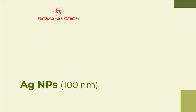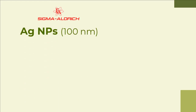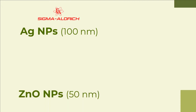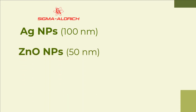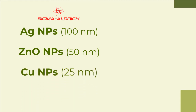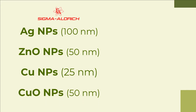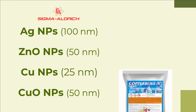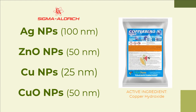These include silver nanoparticles with an average size of 100 nanometers, zinc oxide nanoparticles with a particle size of 50 nanometers, copper nanoparticles with a particle size of 25 nanometers, and copper oxide nanoparticles with a particle size of 50 nanometers. A commercial fungicide product containing the active ingredient copper hydroxide was used as a control or reference.